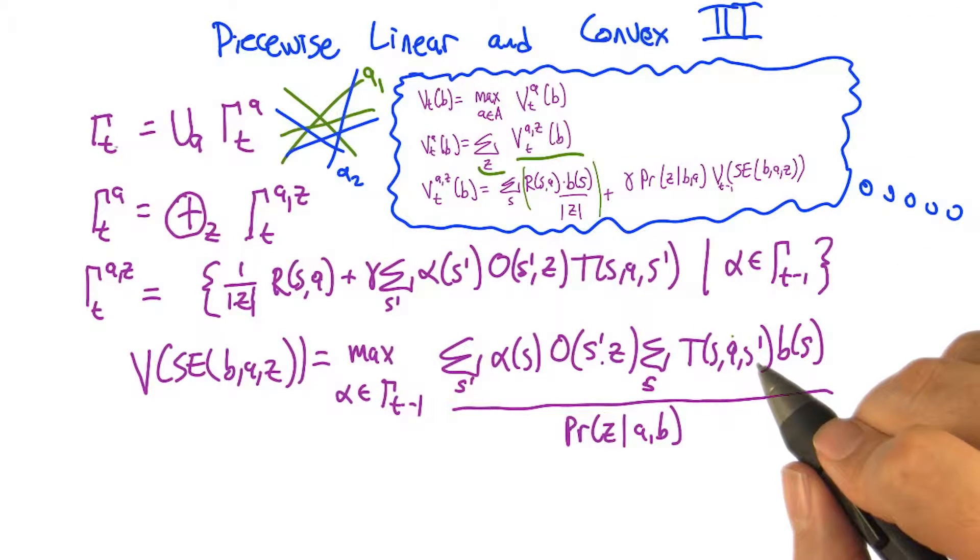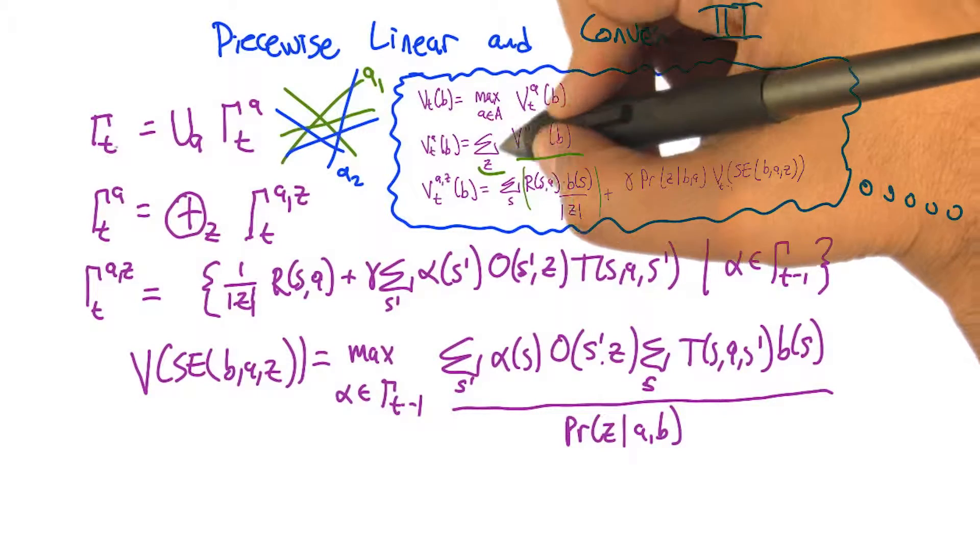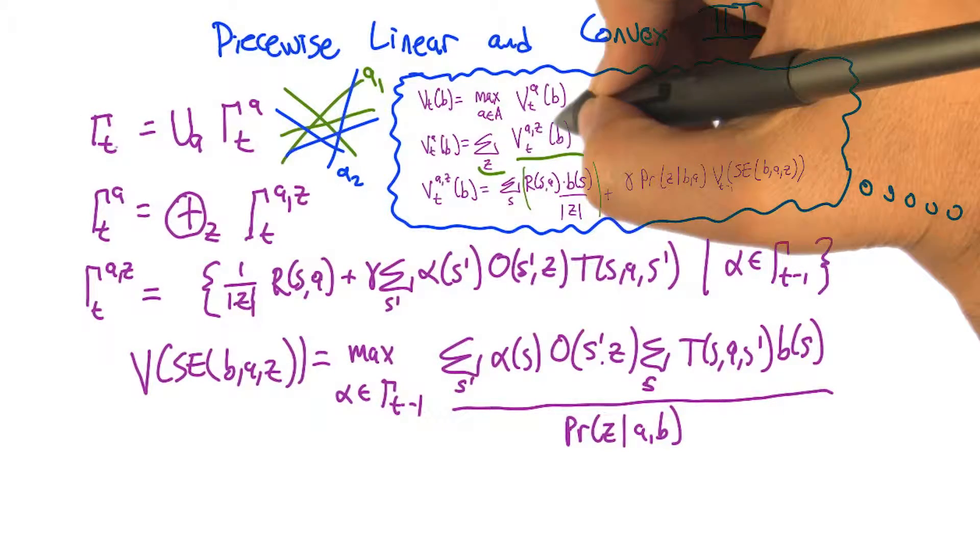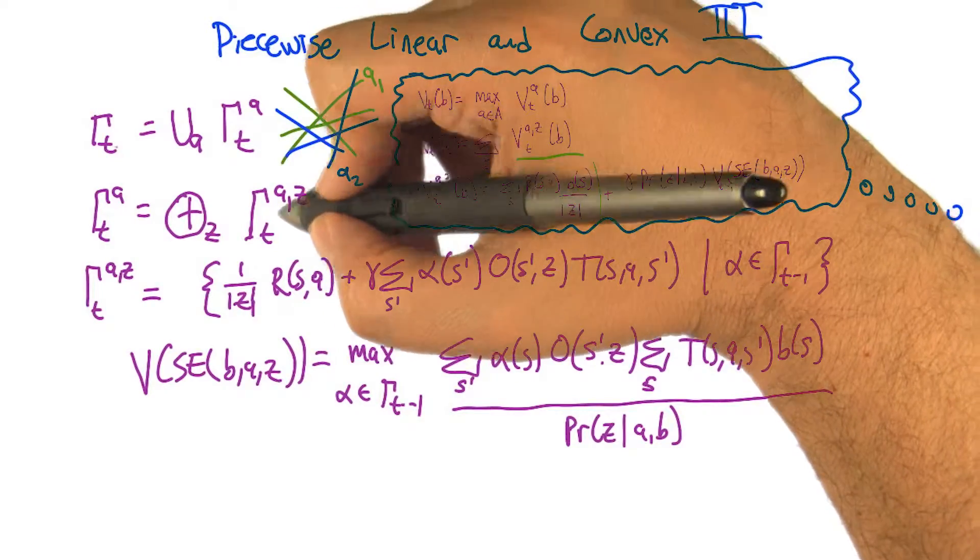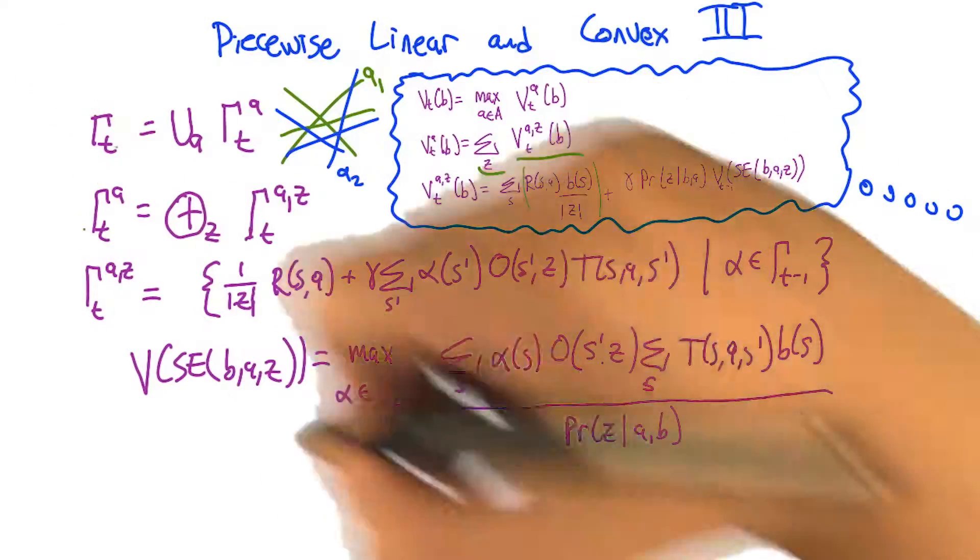So that's just really a fancy way of writing what you just wrote. Yeah, but again, it's letting us go from this function V, which is over an infinite state space B, to just a finite set of vectors. We have a set of vectors and we generate from that a new finite set of vectors.